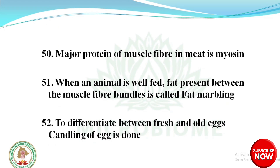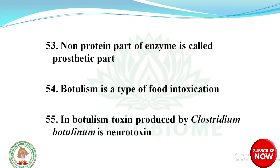Major protein of muscle fiber in meat is myosin. When an animal is well fed, fat present between the muscle fiber bundles is called fat marbling. To differentiate between fresh and old eggs, candling of egg is done. Non-protein part of an enzyme is called the prosthetic part.